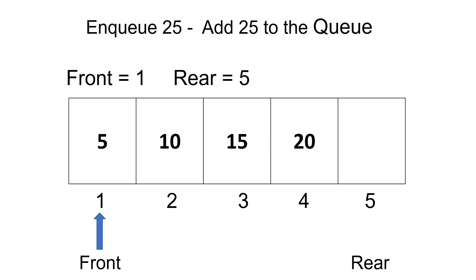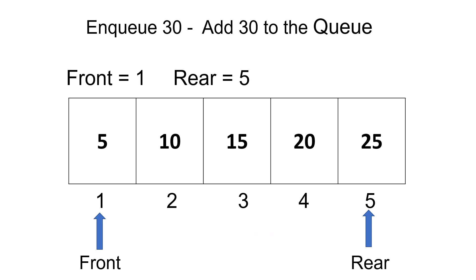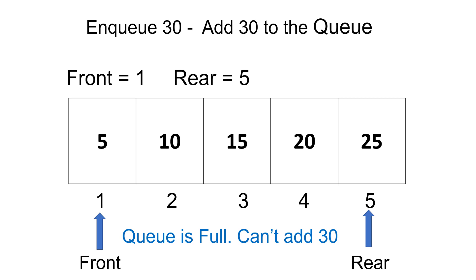After adding 25 to the queue, rear becomes 5. In this case, we can say that our queue is full because the number of elements present in the queue is equal to the size of the array. There is no place to add a new element. If we still apply an enqueue operation, we get an error message that the queue is full.